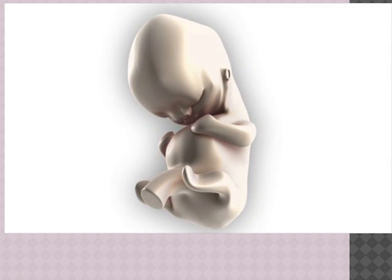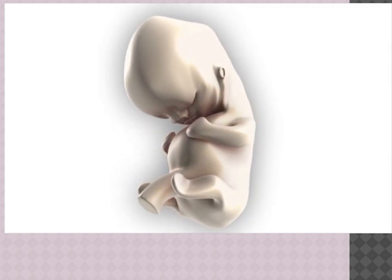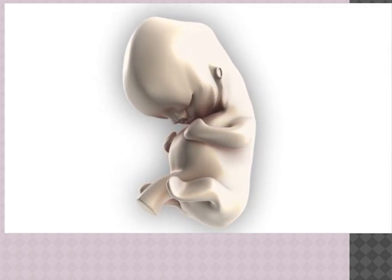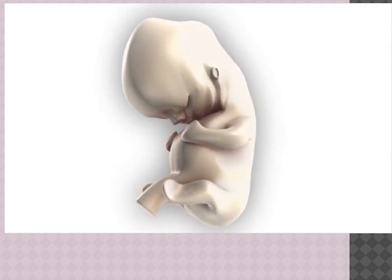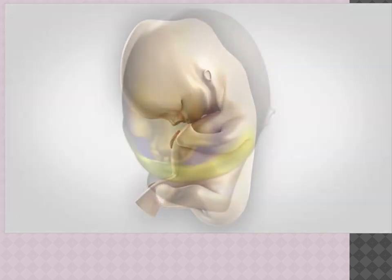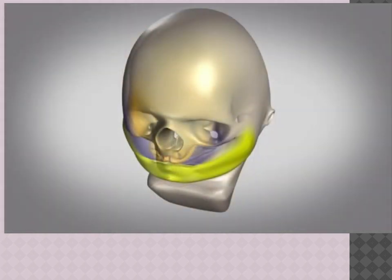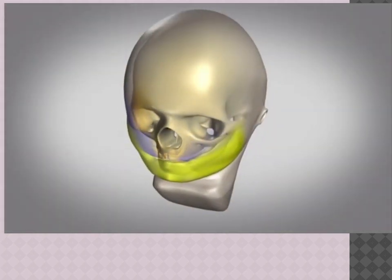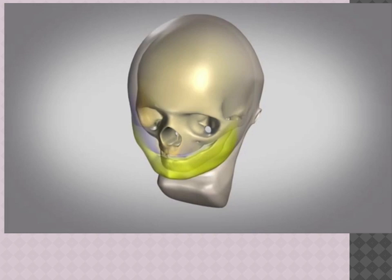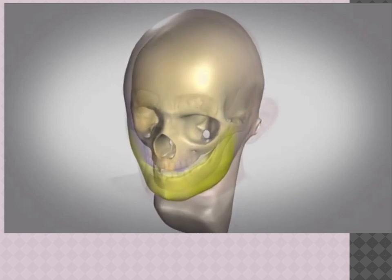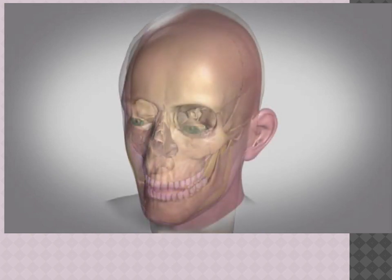By the seventh week of human embryonic development, most facial structures can be observed. In the next few months, the initial cartilaginous skeleton of the face is replaced by bone, and there is an overall increase in shape and size of the different facial structures. From childhood to adulthood, the face continues to develop through further growth and remodeling.